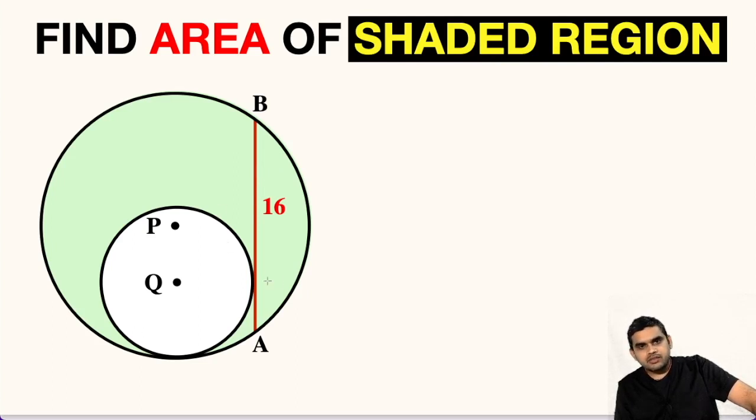As we can see in the figure, we have two circles. The center of the bigger circle is at point P, while this smaller circle has a center at point Q. BA is a tangent to this smaller circle and its measure is 16 units. We have to find the area of this shaded region.